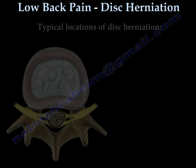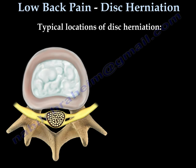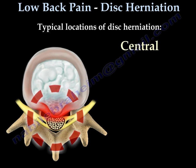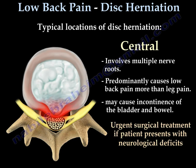There are three typical locations for disc herniations. The first is central, which is a rare condition. It will affect multiple nerve roots. The patient will have back pain more than leg pain, and it may cause incontinence of the bladder and bowel. Urgent treatment is necessary if the patient presents with neurological deficit.